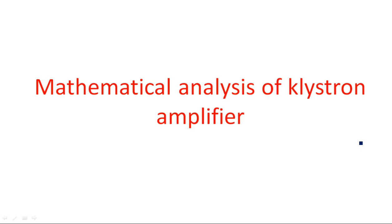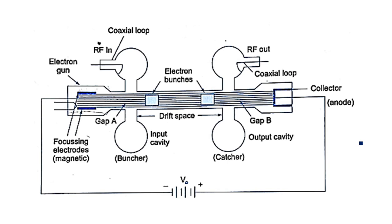In the last class I explained the complete operation and working principle of the klystron amplifier. This is the construction diagram. Capital V naught refers to the DC voltage used to energize the electron gun, applied on the plates of the cathode and anode. This is the input cavity where we apply the RF input voltage through a coaxial cable, and this is the output cavity — the catcher cavity — from which we take the RF output.